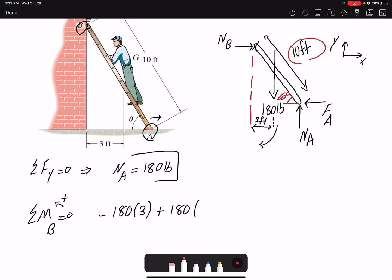So if this is 10 and this one is 60 degrees, then this distance would be 10 cos 60. That would be the moment arm for NA. And I have FA. FA is creating a clockwise moment, so it's a negative value, and the moment arm would be 10 sin 60.